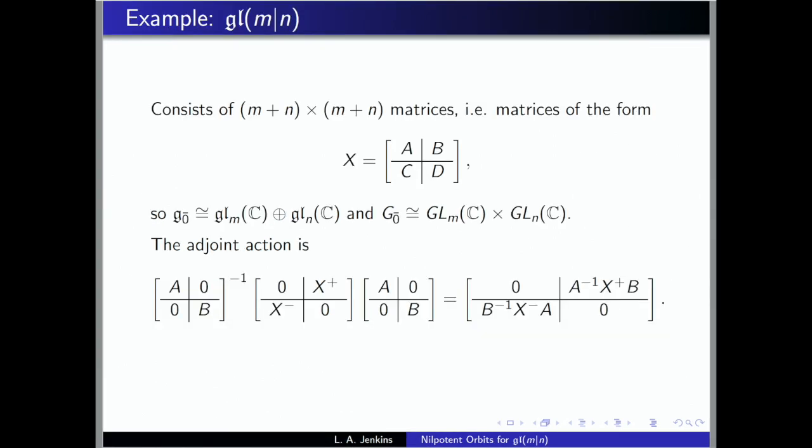We'll be focused on GLMN. I like to think of this very concretely in terms of matrices: these will be (m+n) by (m+n) matrices written in block form. A will be m by m, D will be n by n, and B and C are rectangular of the appropriate size. You can then have identifications as Lie algebras where G0 will be gl_m direct sum gl_n, and capital G0 would be the corresponding general linear groups gl_m cross gl_n. The adjoint action is just matrix conjugation in this block form, where A and B are invertible matrices of size m and n respectively, acting on some odd element in G1.